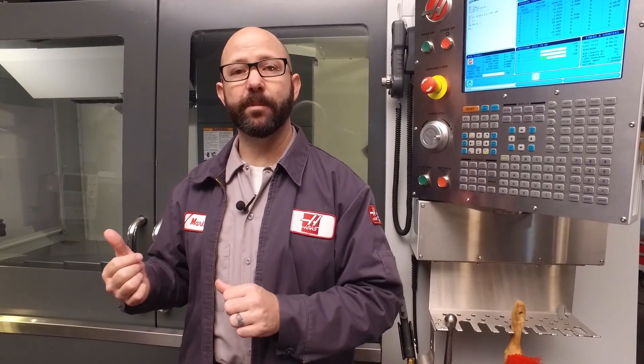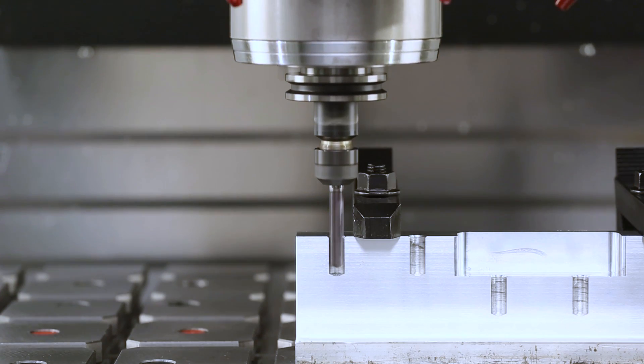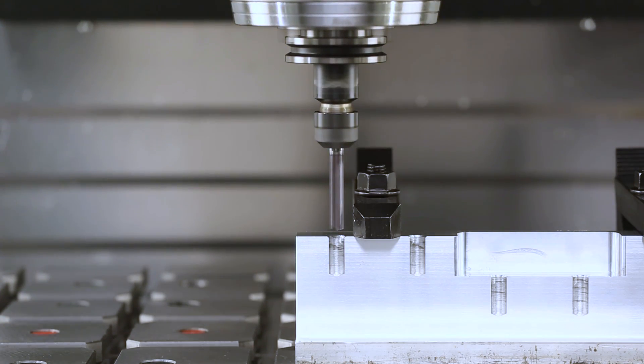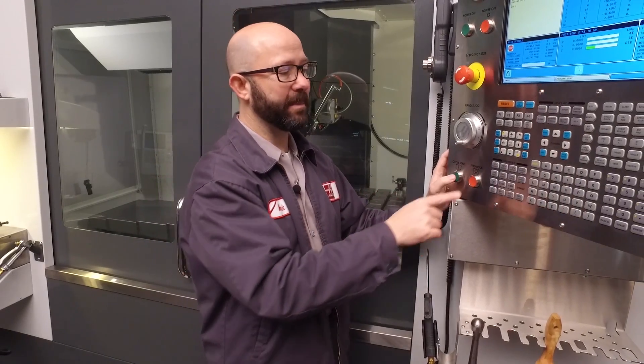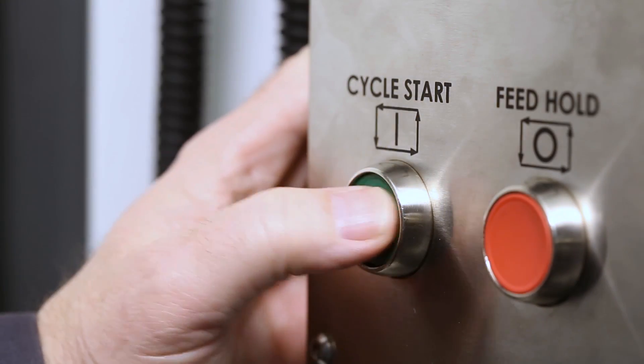Now our machine is set up with the same program that we just showed breaking our tool. We're going to walk through that program again. This time, in single block, just in case, I'm going to lower my feed and rapid overrides. I'll set my rapid to 5% and we'll press cycle start.